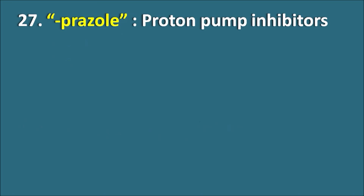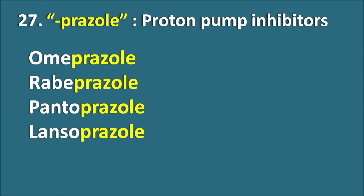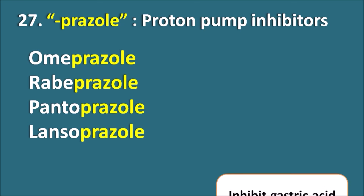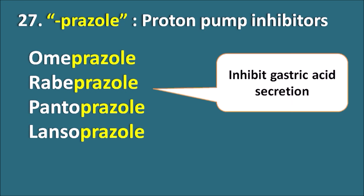Twenty-seventh, the suffix '-prazole' indicates they are proton pump inhibitors. Drugs like Omeprazole, Rabeprazole, Pantoprazole, and Lansoprazole are all proton pump inhibitors. They inhibit gastric acid secretion by inhibiting the proton pump at the gastric parietal cell.